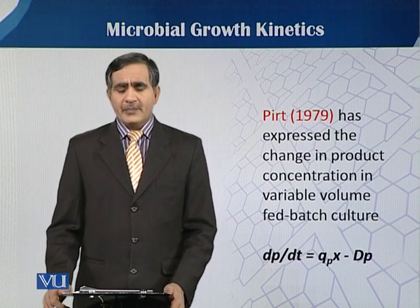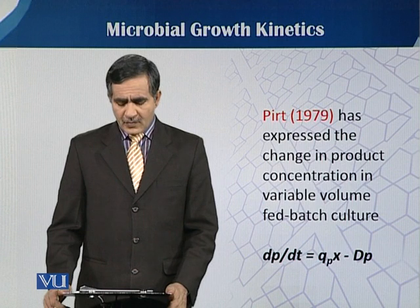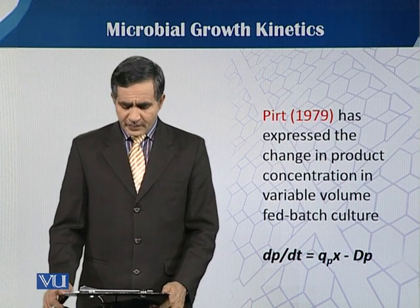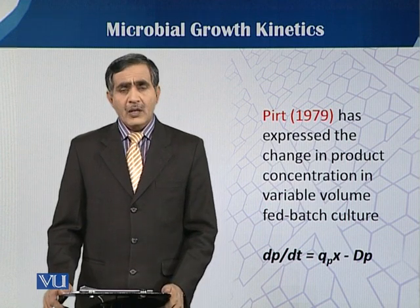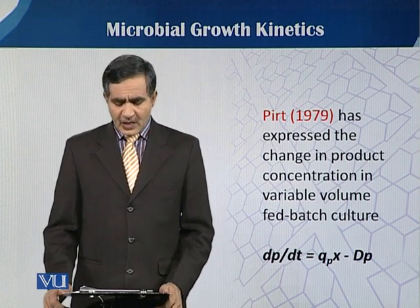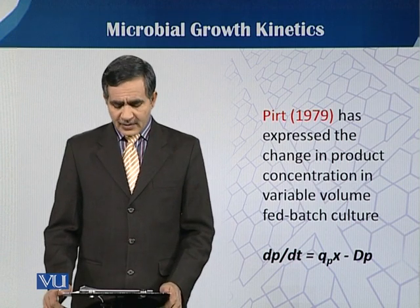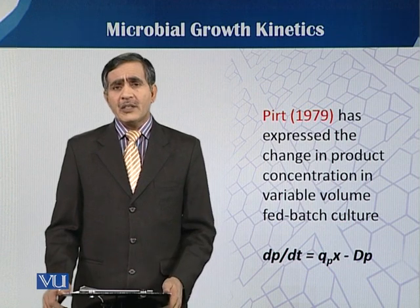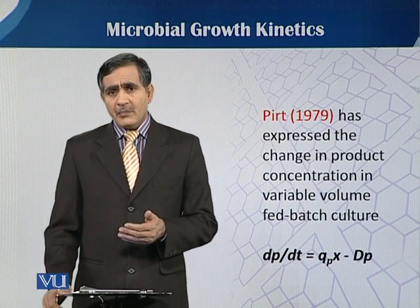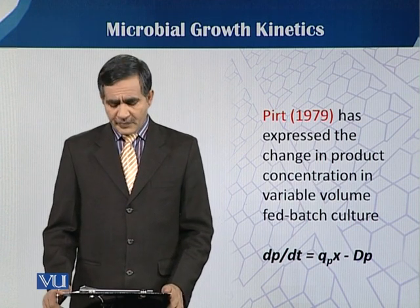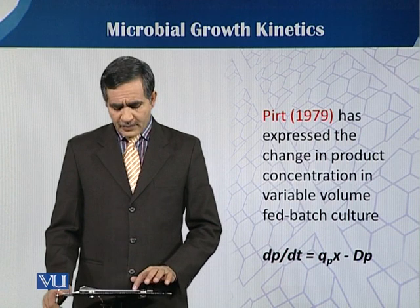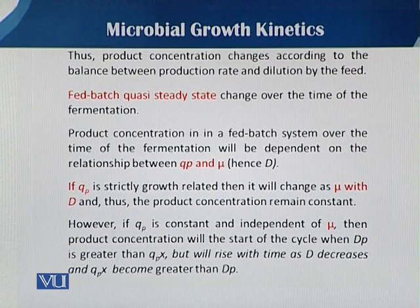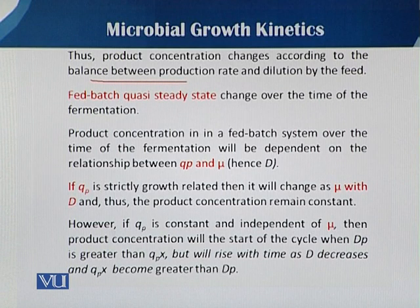As already discussed, PERT expresses the change in product concentration in variable volume, especially in fed batch culture. The equation is: dP/dt = Qp · X − D · P. This equation is originally a continuous culture equation, but PERT also utilizes it for fed batch culture. The product concentration change reflects the balance between the product formation rate and dilution by the feed.